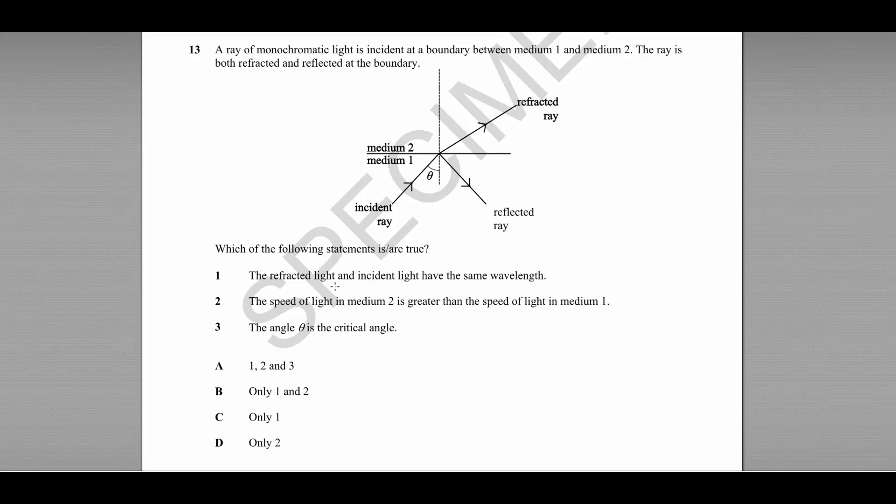Statement number 1, the refracted light and the incident light have the same wavelength. Well, we know from the equation V equals F lambda, where V is the speed of the wave, F is the frequency and lambda is the wavelength. We know that the frequency of a wave never changes, so that is a constant.